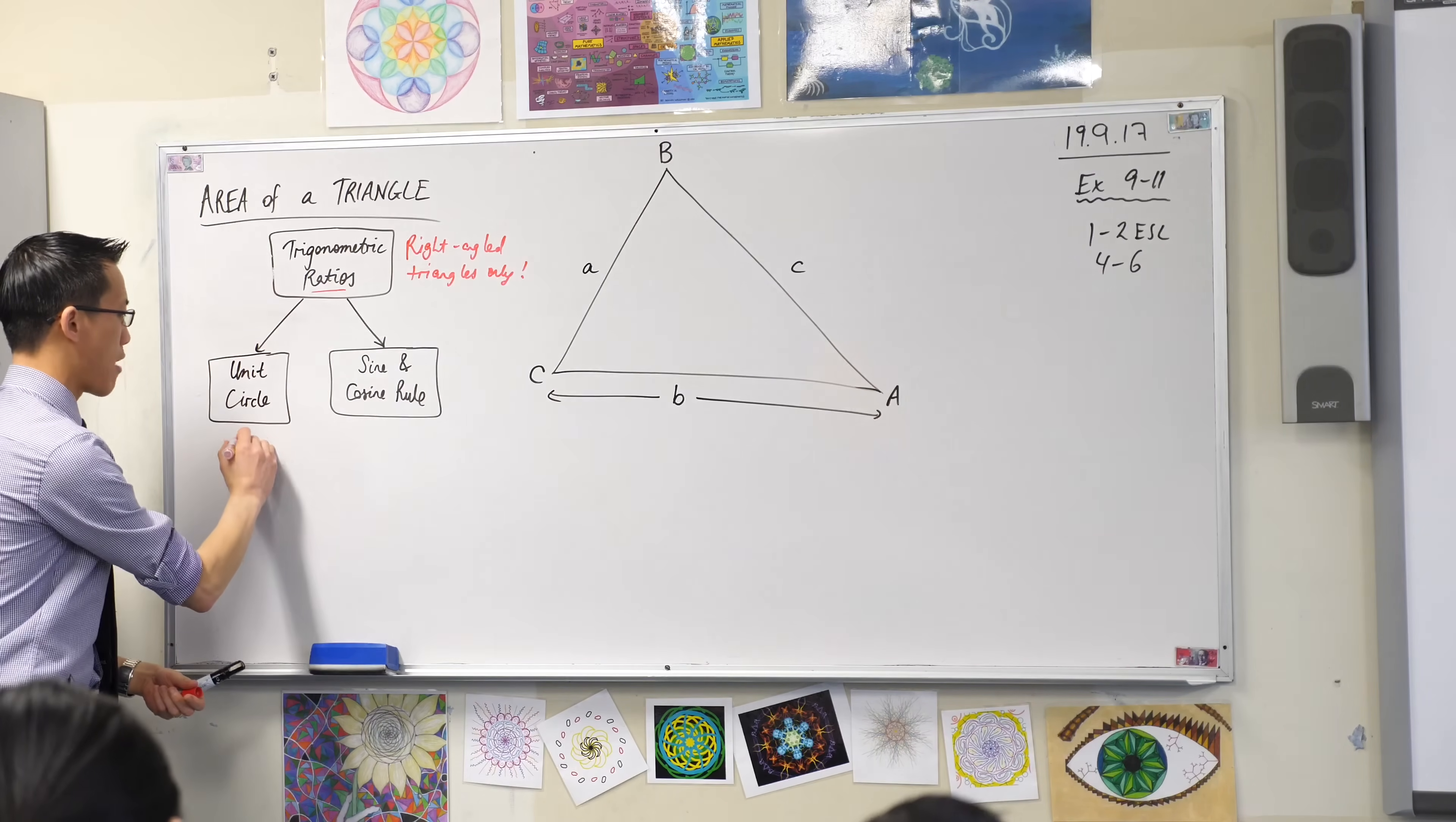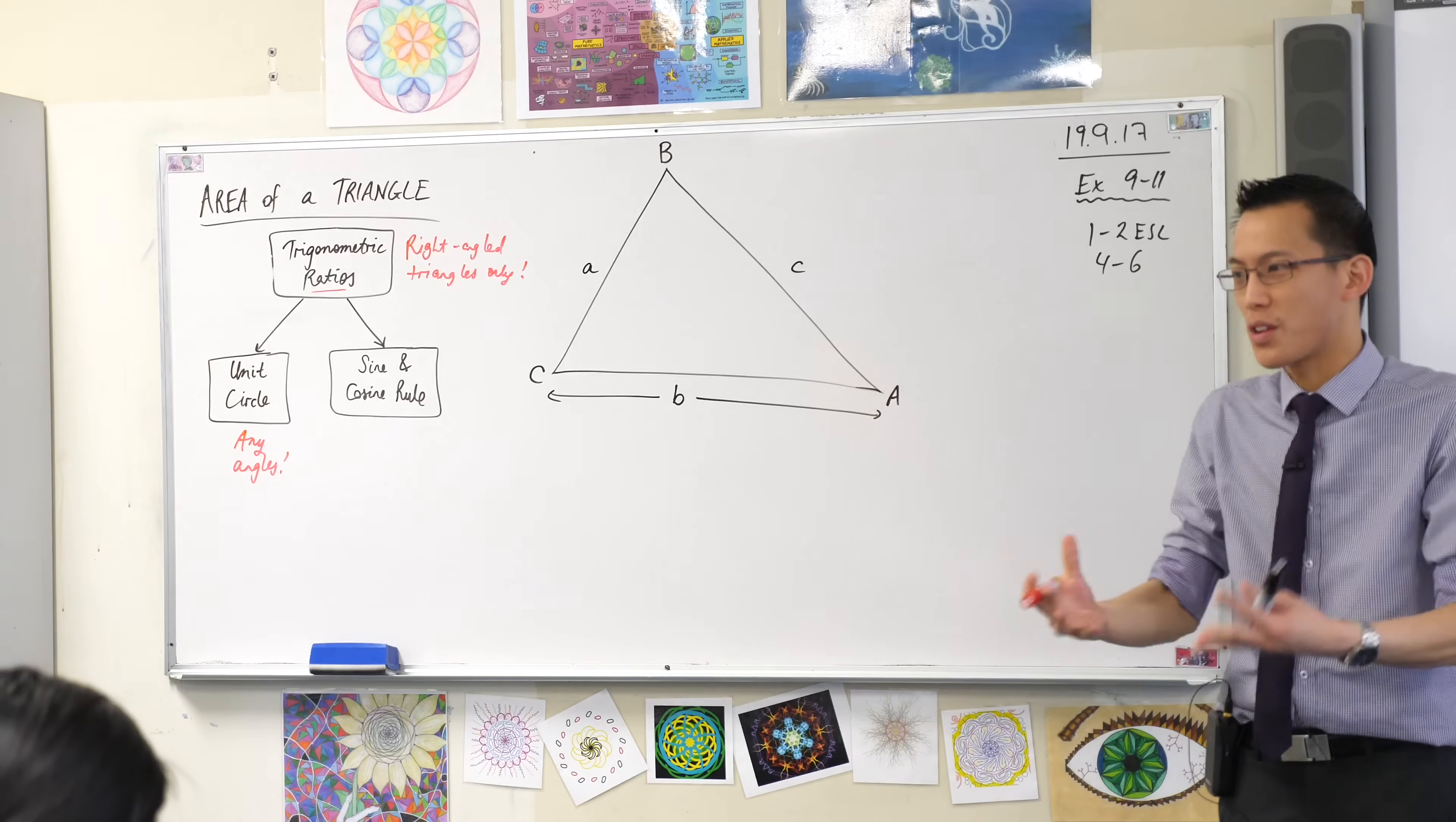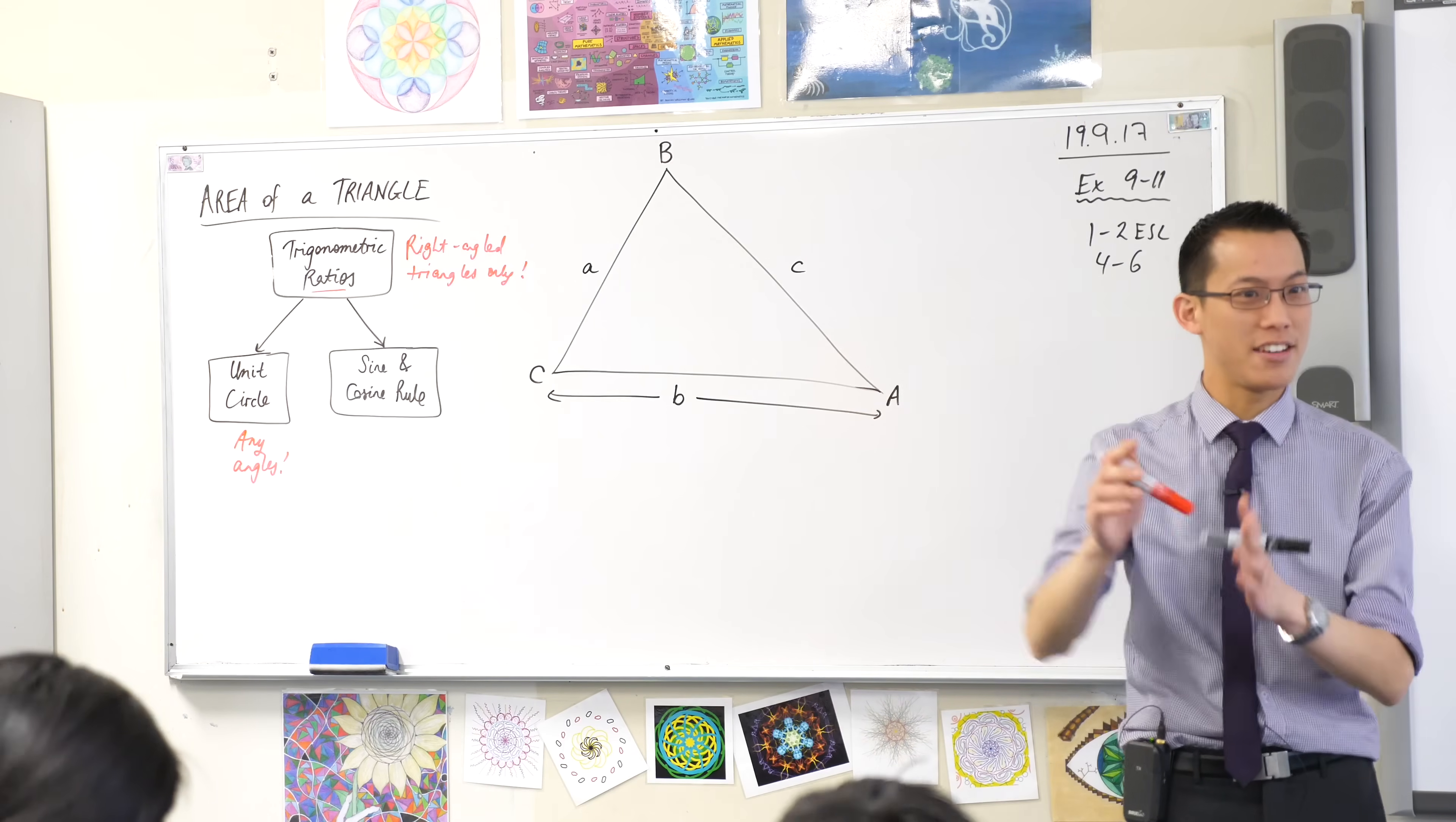If you're in right angled triangles, the only angles you ever deal with are acute angles. Cos they're the only angles you can fit in your right angled triangle. But when you have the unit circle, you've got quadrants now. You can spin round and round and round.